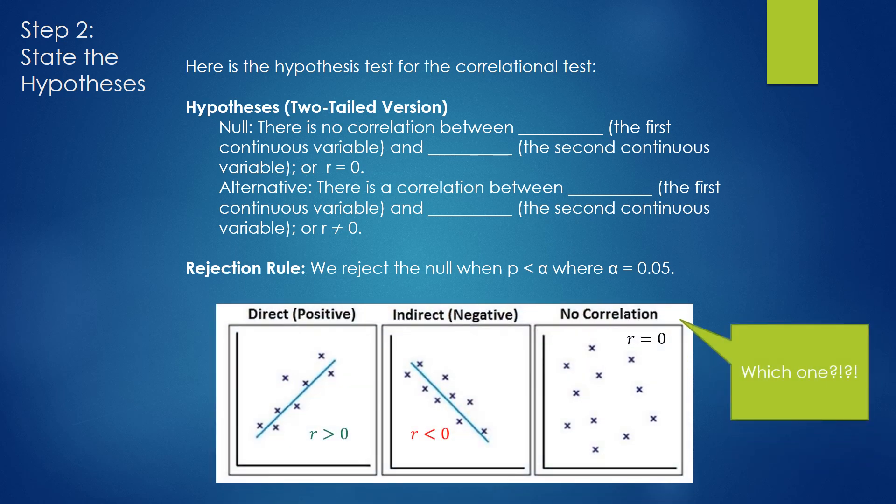So what are we really asking? We're asking this. If we were to plot our data or our variables on a scatter plot, which one of these three diagrams would we get? Would we get r greater than 0, as you see to the left? Would you get r less than 0, which you see in the middle? Or would you get r equal to 0, which you see to the right?